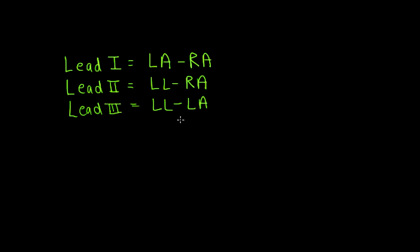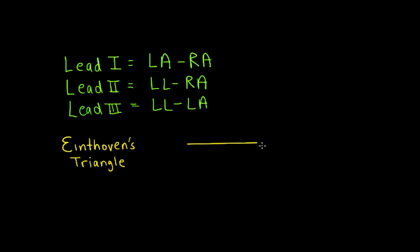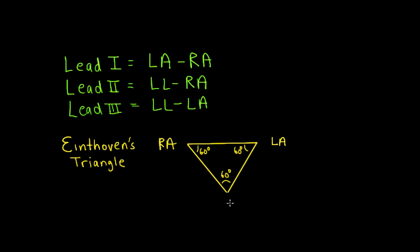Leads 1, 2, and 3 — the bipolar limb leads — can be represented schematically as an equilateral triangle. This is called Einthoven's Triangle, named after a Dutch physician who invented the electrocardiograph in the early 1900s. The heart sits in the center of this equilateral triangle, with 60 degrees at every angle. We have the left arm, the right arm, and the left leg electrode. The right leg electrode just functions as the electrical ground, so we leave that off this triangle.